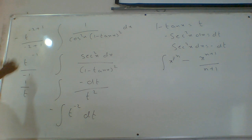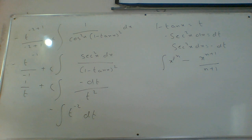Do not forget to put c. While the integration process completes, c will come. In the place of t, substitute 1 minus tan x. So the final answer is 1 by (1 minus tan x) plus c.